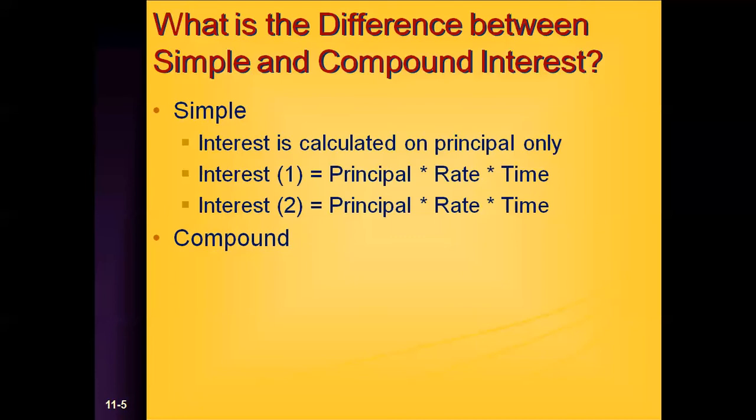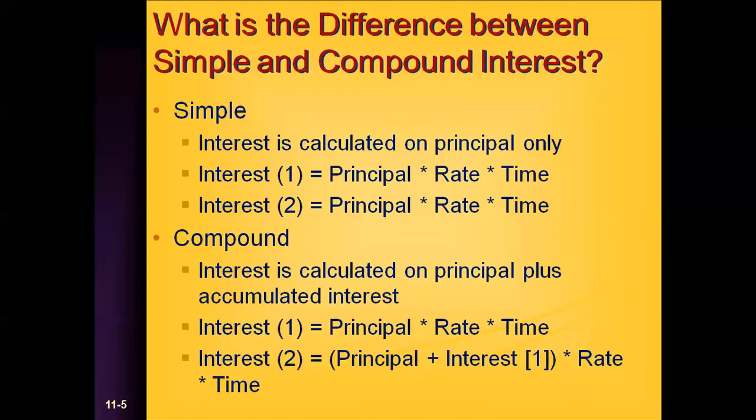So what about compound? Compound interest says, what we're going to do is we're not only going to account for the traditional simple interest, but we're going to add the interest we earned from period one to the principal and then we're going to do the same calculation rate times time. Interest equals principal times rate times time. It's the same calculation as the simple interest calculation in period one. However, in period two, you take the interest earned from period one, add that to principal, and then you multiply that times rate times time.